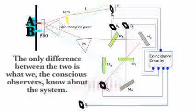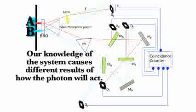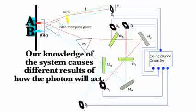But the only difference between these two is what we, the conscious observer, know about the system. Our knowledge of the system causes different results in how the photon will act.